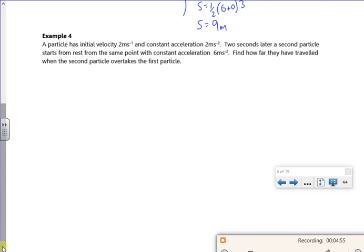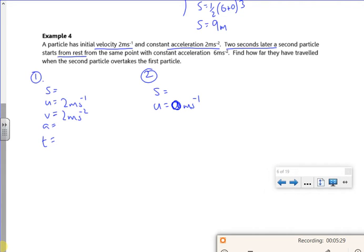So a particle has an initial velocity of 2 meters per second and a constant acceleration of 2. So I've got the first one, S, U, V, A, T. So initial velocity of 2, acceleration of 2. Two seconds later, a second particle sets off from rest. So that's 0 for U. From the same point with a constant acceleration of 6.